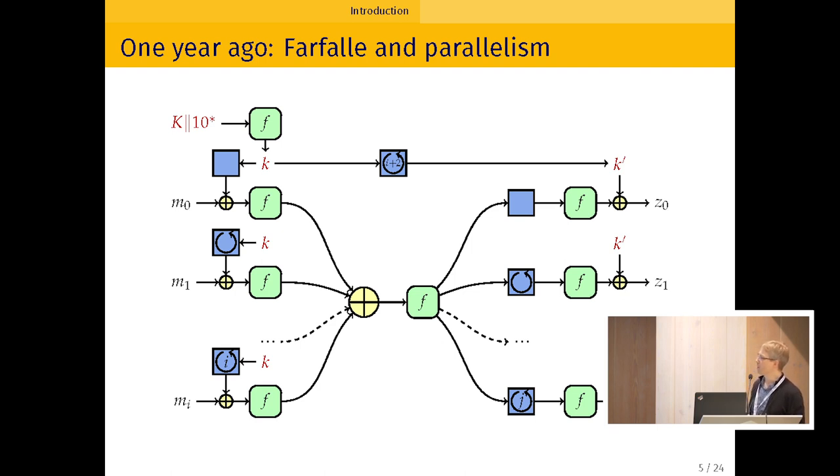So it takes as input a secret key K. It goes to the permutation to create a mask. And then the input of this random function is divided into blocks. The mask is going to be XORed into these blocks, but the mask is going to evolve through a rolling function depicted in blue. And then all these resulting XORs will go through permutations and the outputs will be summed. So you can see that all these calls to the permutation can be parallelized. Then the sum goes through another call to the permutation. And then the output is again going through a rolling function to be diversified, and we XOR the secret mask. This gives us output blocks. So again, the output can also be parallelized.